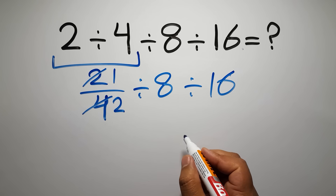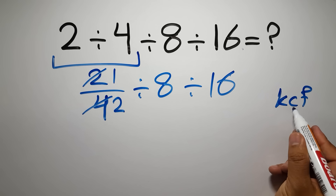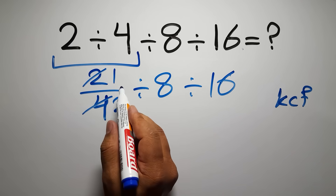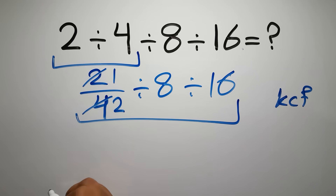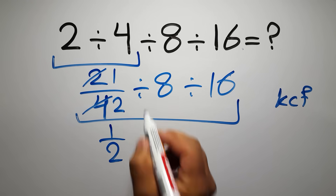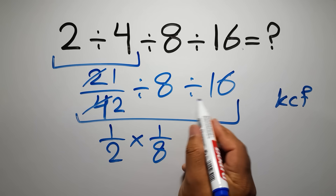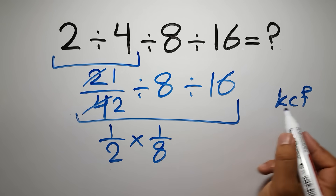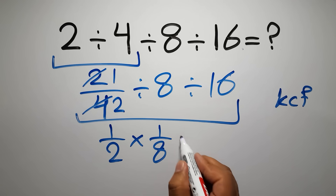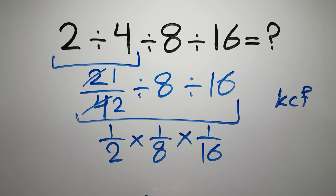According to the KCF rule — K stands for Keep, C stands for Change, and F stands for Flip — we keep the first fraction, change division to multiplication, and flip the second fraction. We apply the KCF rule again: change division to multiplication and flip the second fraction.